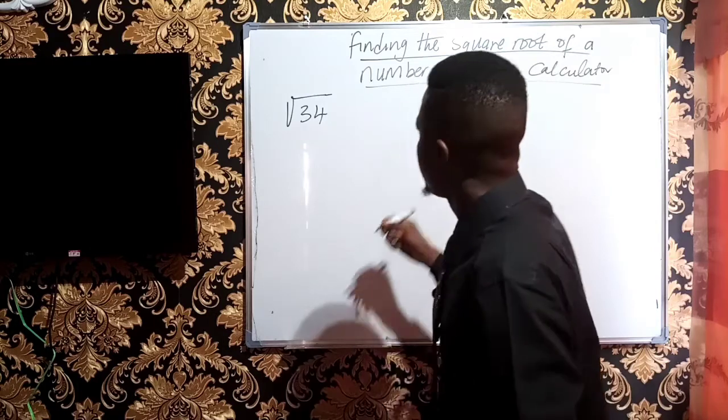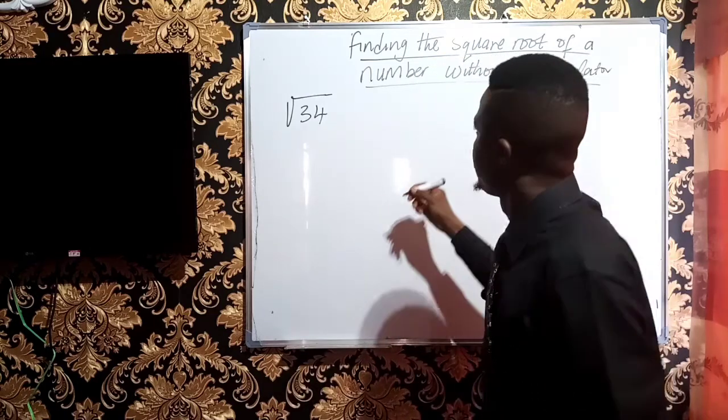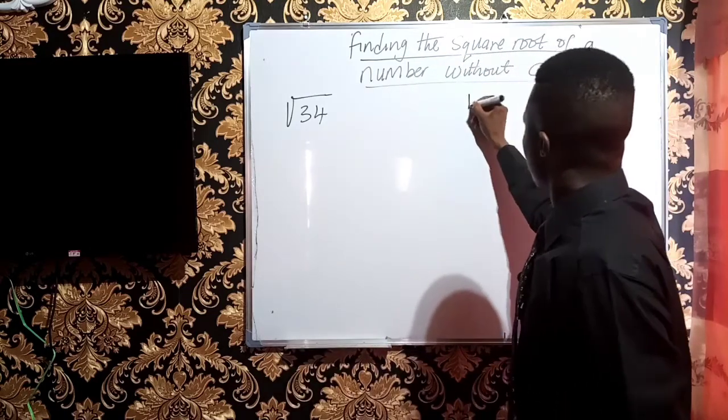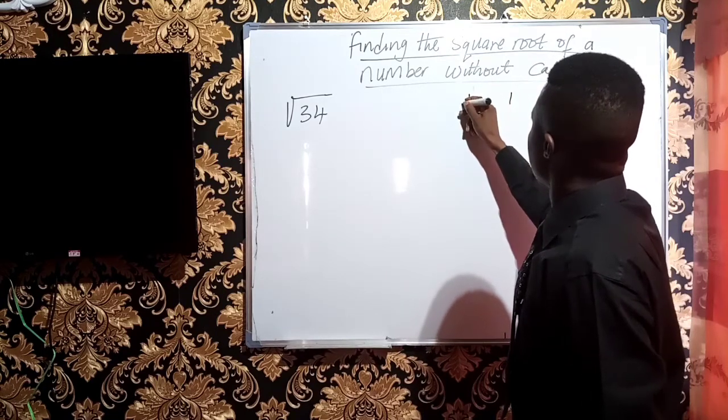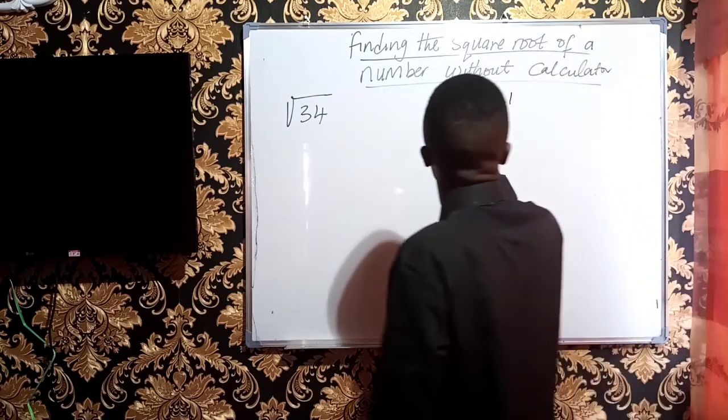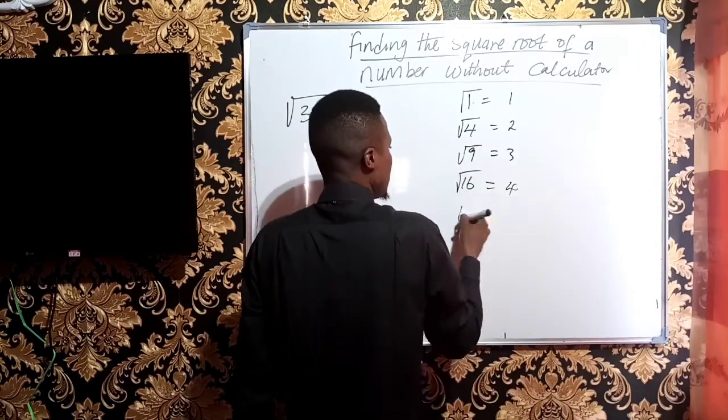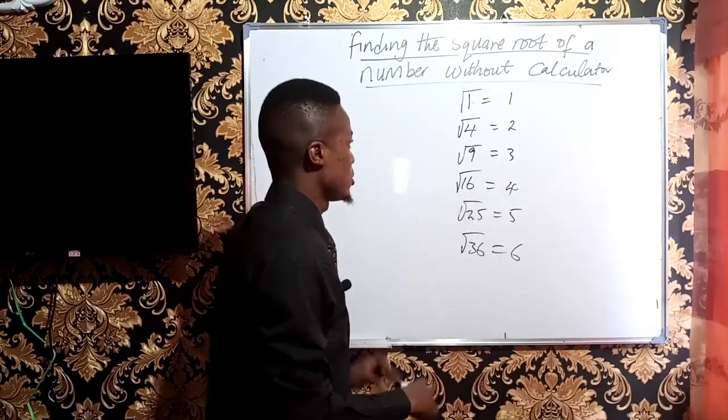Now, you should know the perfect squares. For instance, you know that 1 squared is 1, or rather the square root of 1 will give us 1, and so on and so forth.